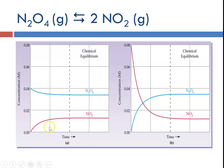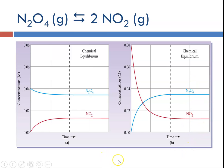If we look at concentrations versus time, we initially have our concentration of dinitrogen tetroxide at 0.04 molar, and we're starting out with the product, nitrogen dioxide, at zero. The dinitrogen tetroxide is decreasing and the nitrogen dioxide is increasing, and then all of a sudden we reach a point where their concentrations do not change. In the reverse direction, nitrogen dioxide levels off and dinitrogen tetroxide goes from zero and then reaches a point where concentrations do not change, because the forward and reverse reactions are occurring at the same rate.